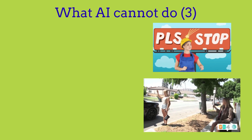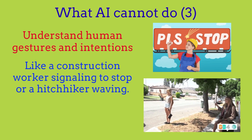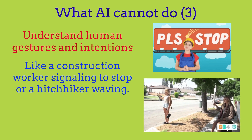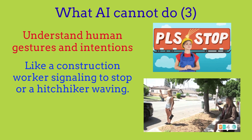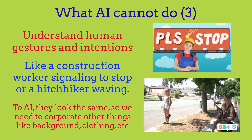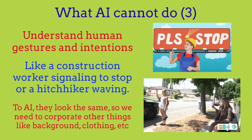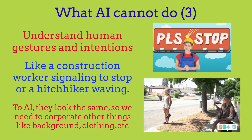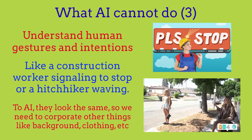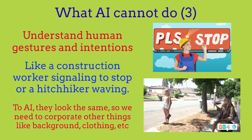The third thing AI cannot do is understand human gestures and intentions — like a construction worker signaling or a hitchhiker waving. Both people are waving, but the construction worker is signaling cars to change lanes, while the hitchhiker wants the car to stop and give them a ride. To an AI, they look the same. We'd need to incorporate background context, like signs behind a construction worker, or clothing like a helmet or colorful vest. This is another thing AI cannot do currently, though it will likely change as AI rapidly grows.